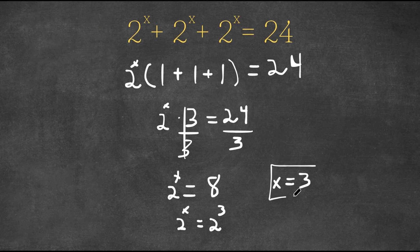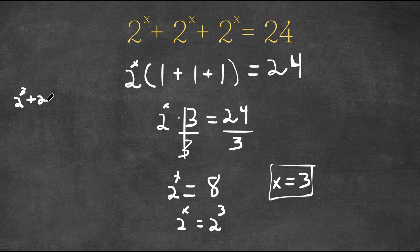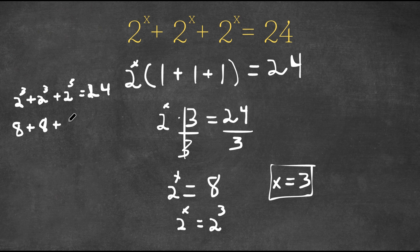So this is our answer. Now if I plug this in to our equation here, we have 2 to the power of 3 plus 2 to the power of 3 plus 2 to the power of 3 is equal to 24. Now 2 to the power of 3 is 8, so now we have 8 plus 8 plus 8 is equal to 24.